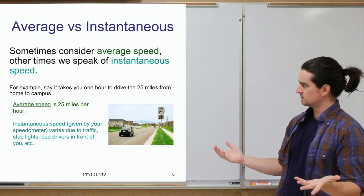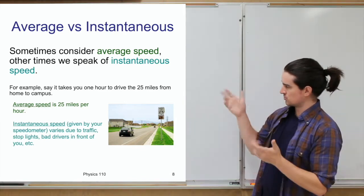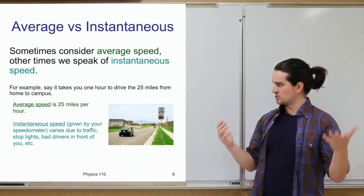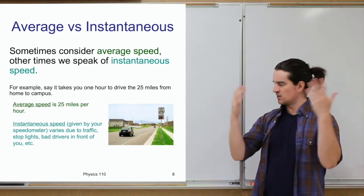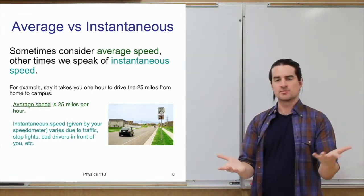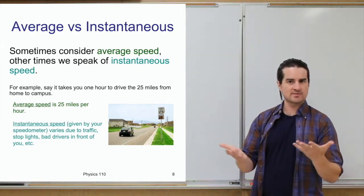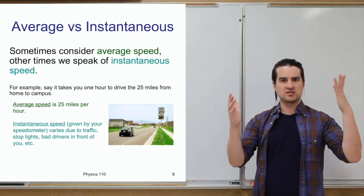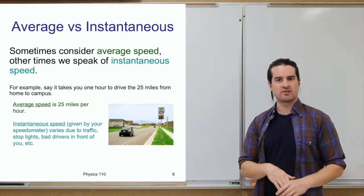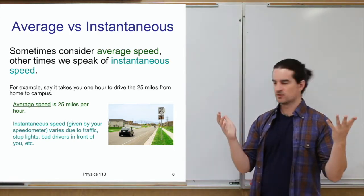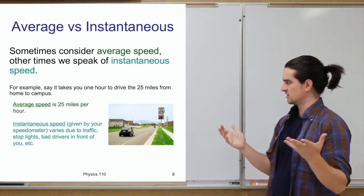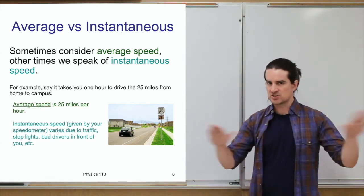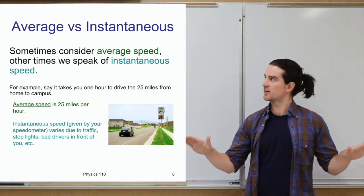If you're going 25 miles and it takes an hour, your instantaneous speed might be all kinds of things. It's going to be zero at times when you're stopped at a sign, maybe 60 miles per hour when you're on the highway for a few minutes. That's the difference between instantaneous versus averaging over the entire trip.